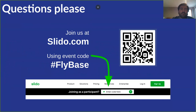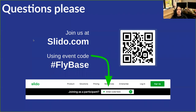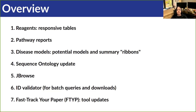If possible, we ask that you submit your questions using Slido. You can follow the link in the Zoom chat, or you can go to slido.com and type in the code Flybase. OK, let's jump right in.